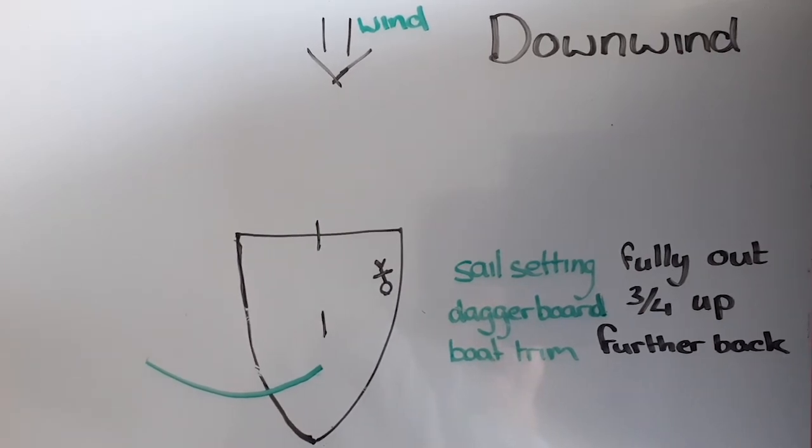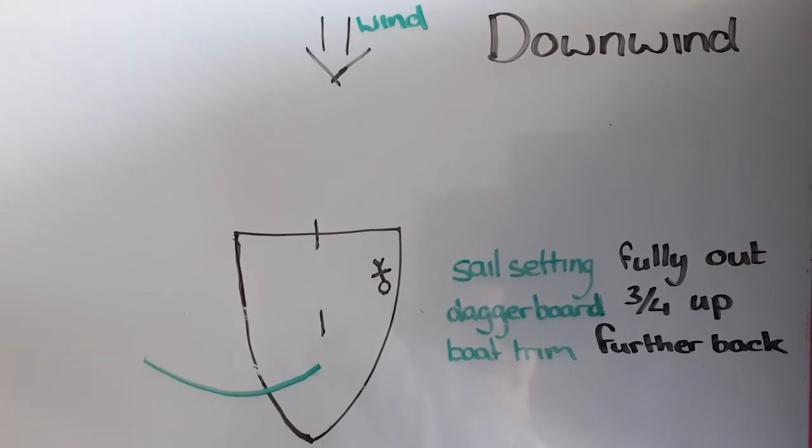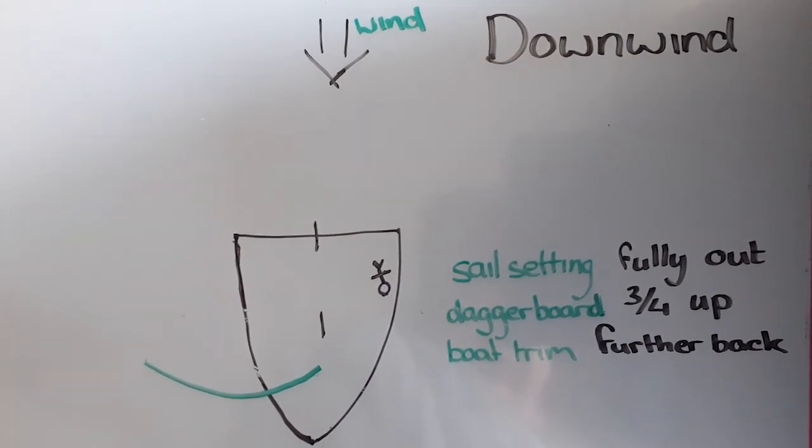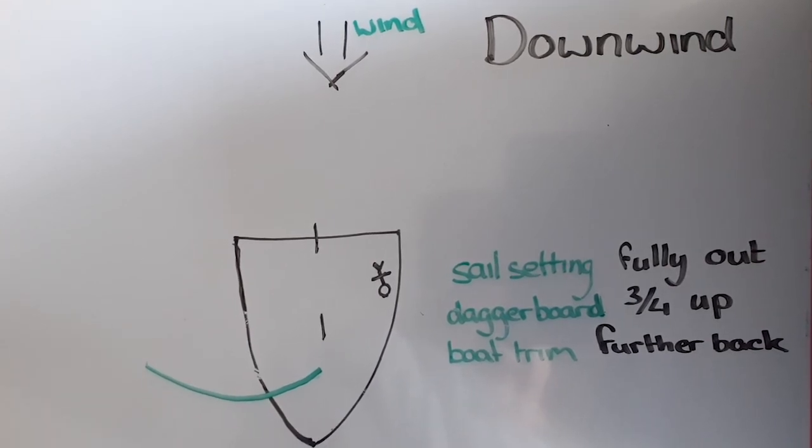On this point of sailing, you want the sail to be fully out and you want the outhaul, downhaul, and kicker to be loose. You want the daggerboard to be three-quarters of the way up, and for your boat trim, you want to be sitting slightly further back in the boat.